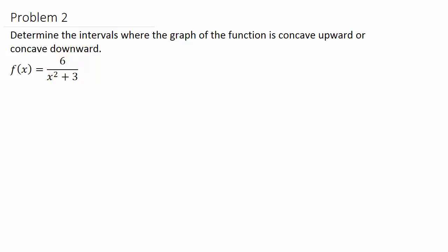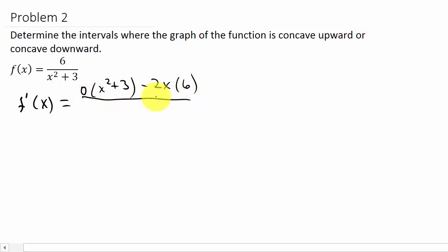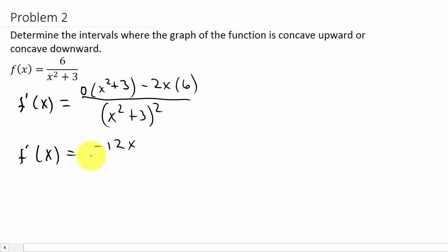First we need to find the second derivative, so let's find the first derivative. We use the quotient rule: the derivative of the numerator, which is zero, times the denominator, minus the derivative of the denominator times the numerator, all over the denominator squared. So we're left with F prime of x equals negative 12x over (x squared plus 3) squared.